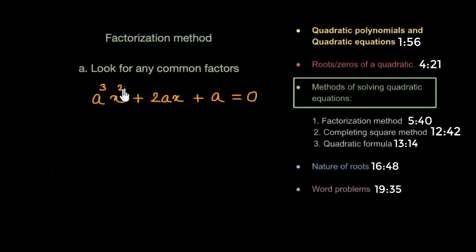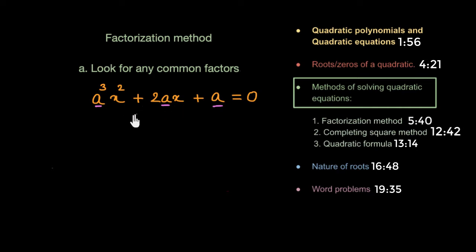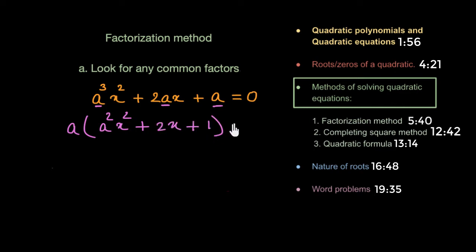First, we would like to start with pulling out any common factor from the given terms of the quadratic equation. For example, if a is the common factor in all three terms, we can pull out one 'a' from all three terms. So we would have a(a²x² + 2x + 1) = 0. Now we can further think about factorizing this simplified quadratic equation — pulling out 'a' made it clearer to factorize further.